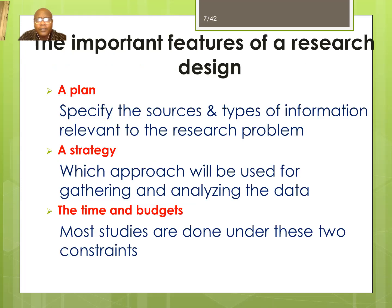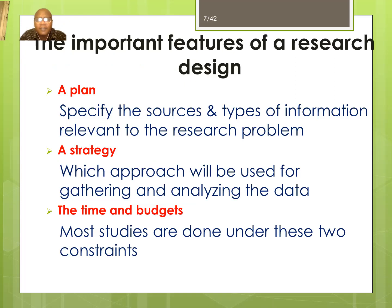The important features of research design are: it should have a plan, it should specify the source and type of information for the research project. To what extent are you going to gather information? For example, you may concentrate on information published in various journals for the last three years or the last one year — being specific about that extent is very important.